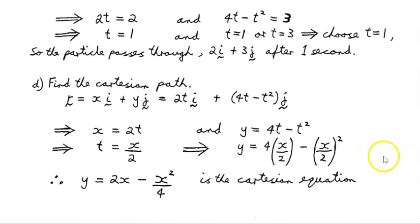Now, find the Cartesian path. So we can convert this into a Cartesian path. And what that means is that the position vector r is given by the x component in the i direction plus the y component in the j direction. That gives us 2ti + (4t - t²)j. Again, same thing. We set x = 2t. That tells us that t = x/2. We set the y component equal to 4t - t².